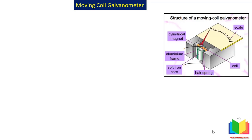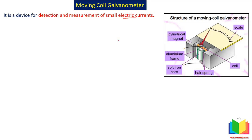Now we have to discuss moving coil galvanometer. Moving coil galvanometer is a device used for detection and measurement of small electric currents. If in any circuit a small electric current is flowing of the order of micro amperes or milli amperes, then we can use the galvanometer for detection of small values of current. And if we have to find large values of current, we can convert this galvanometer with some modification into an ammeter. Galvanometer can also be used to measure small potential difference.